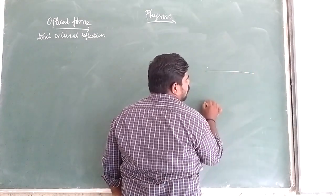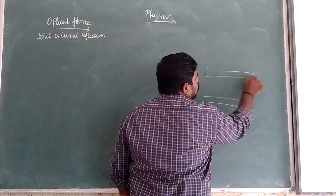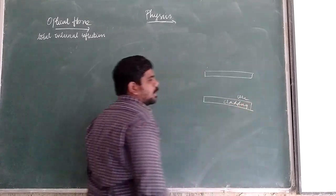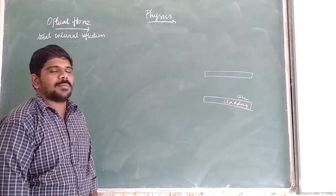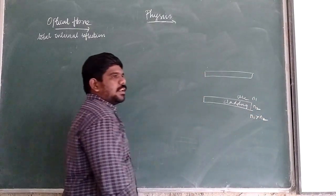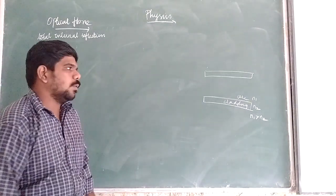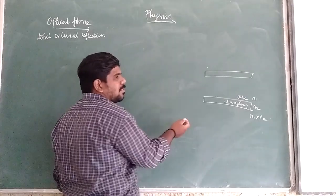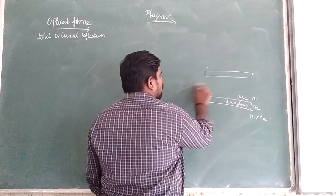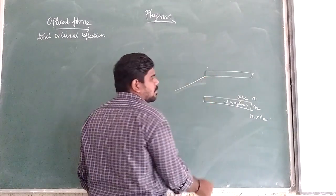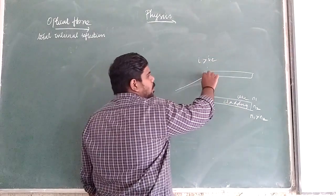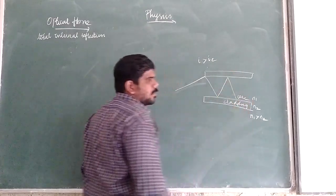The inner part of an optical fiber is called the core, and the outer part is called the cladding. The refractive index of the core is always greater than that of the cladding. The light signal is incident on the core-cladding interface at an angle of incidence greater than the critical angle.